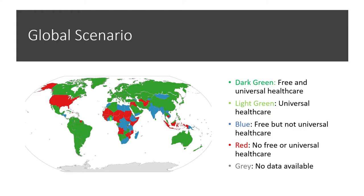On this map, countries in dark color have free and universal health care — for example, Australia, Netherlands, United Kingdom, and Taiwan. Light green countries have universal health care but not entirely free. Blue countries like India, Mongolia, and Egypt have a free health care system but it is not universal — not accessible to everyone. Red countries like the United States, Afghanistan, and Saudi Arabia have universal health care but not free health care.